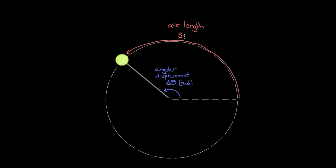Finding the arc length is extremely easy if we use radians — and this is why we use radians. To find the arc length of the tennis ball, just take the radius of the circular path (the length of the string) and multiply by the angular displacement: S = r·Δθ. This gives you how many meters along the path the object has traveled.